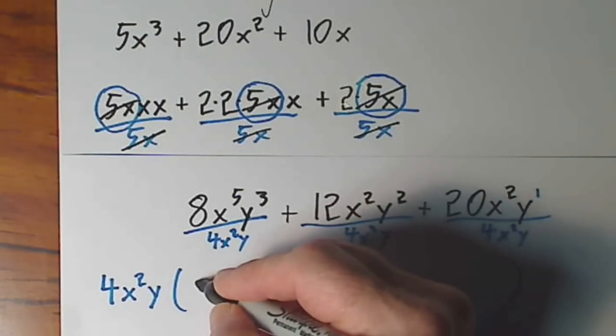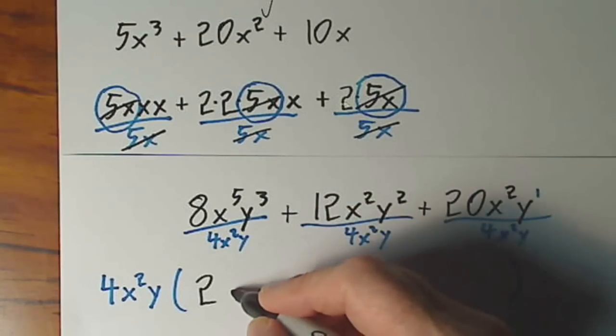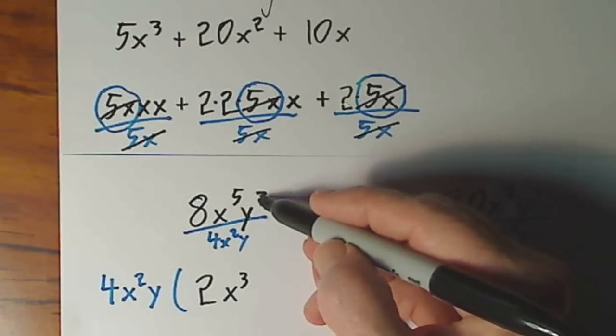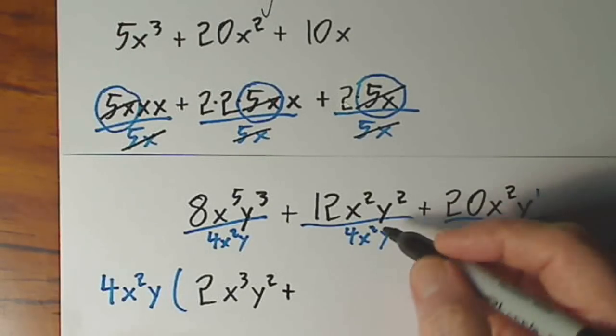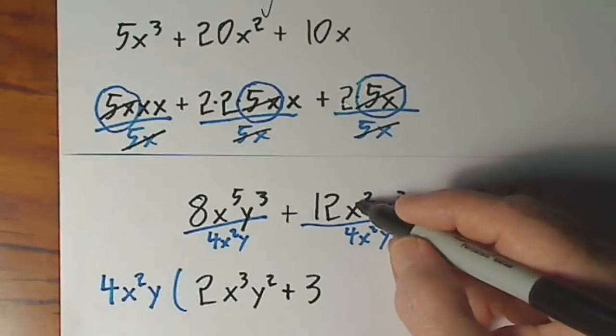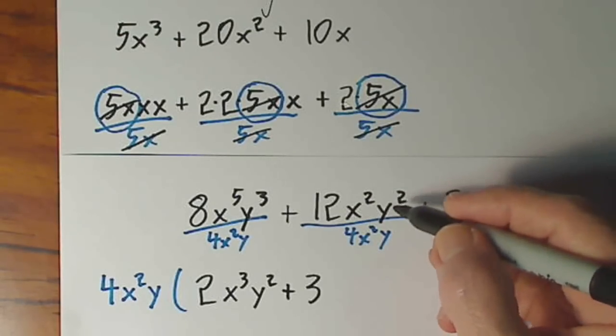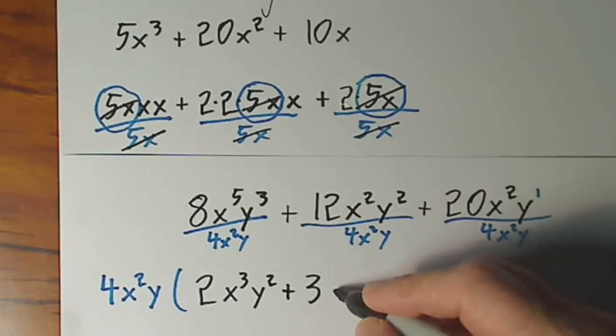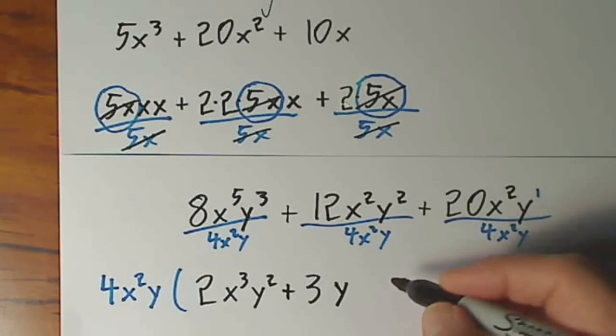So the 8 divided by 4 leaves us with a 2. x to the 5th divided by x squared leaves us with x to the 3rd. You simply subtract exponents. y to the 3rd divided by y leaves us with y squared. We move over to our next term. 12 divided by 4 is 3. x squared divided by x squared is 1. y squared divided by y would simply leave y to the first up top. So that middle term cleans up to 3y.